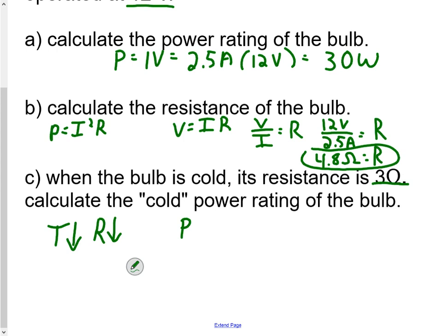Let's try the power rating. This time we have R and we already have current, so why don't we use P equals I squared R. So we're going to do P equals 2.5 amps—don't forget to square it—times 3 ohms. P equals 18.75 watts.